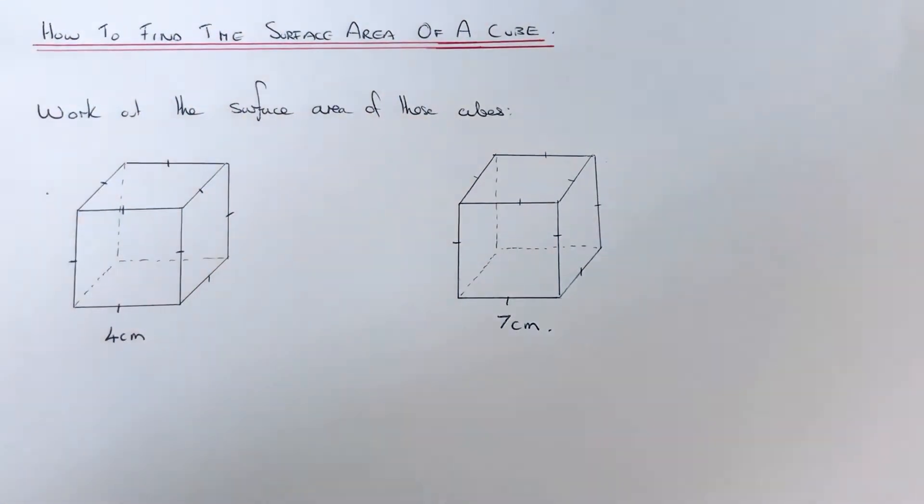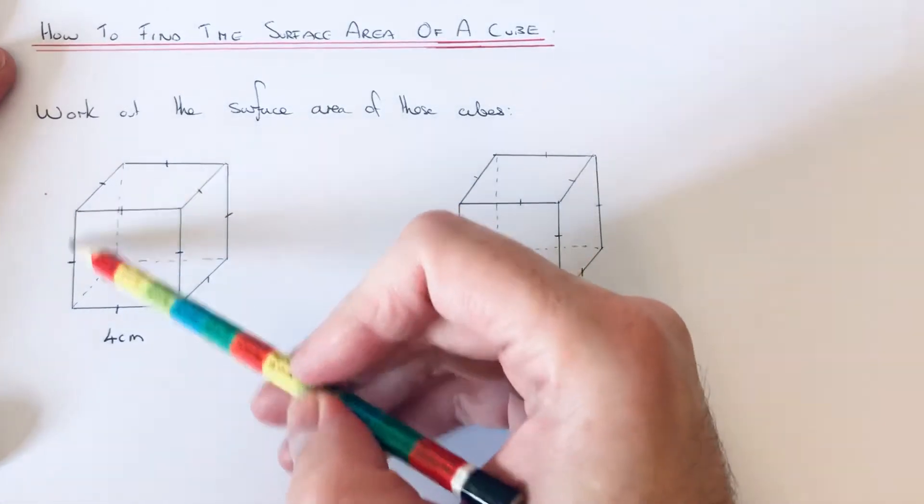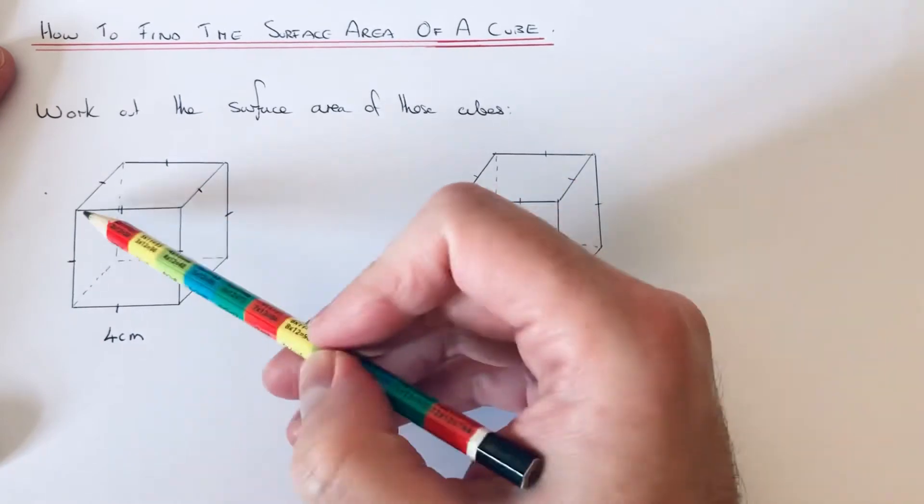Hi guys, welcome back. This is Maths 3000. I'm going to show you how to work out the surface area of a cube. To work out the surface area of any shape, you need to work out the area of all the faces and add them all together. Now a cube has six square faces.